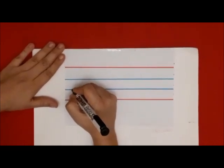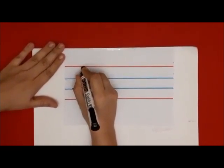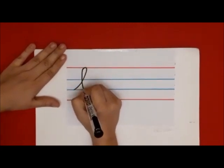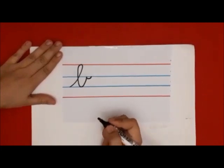Start from the blue line, go up, make a loop, come back, touch the blue line and a small smile. Like you make letter L,